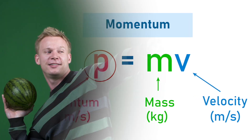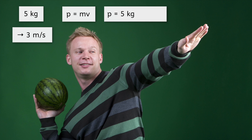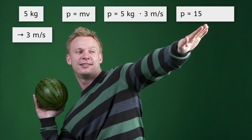Let's try an example. If I throw a 5 kilogram watermelon at a velocity of 3 meters per second, how much momentum does it have? I need to multiply 5 kilograms by 3 meters per second, and I get 15. What's my unit? What units did I multiply? Kilograms and meters per second. So it may feel a little clunky, but that's my unit for momentum: kilogram meters per second.